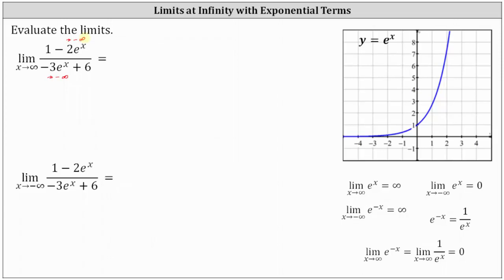This means we'll have to change the form of this function to determine the limit, and we'll take a look at two methods for doing this. First, if negative two e to the x is approaching negative infinity, the one has almost no impact and we can ignore it. Similarly, in the denominator, if negative three e to the x is approaching negative infinity, the plus six has almost no impact and we can ignore it. So the given limit equals the limit of just negative two e to the x divided by negative three e to the x as x approaches infinity.